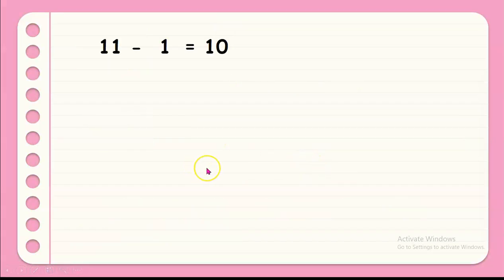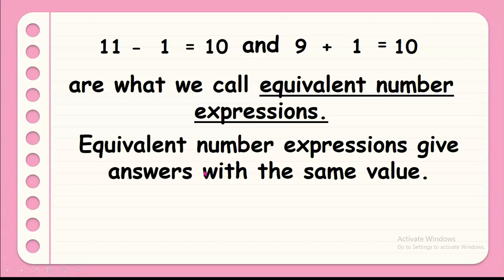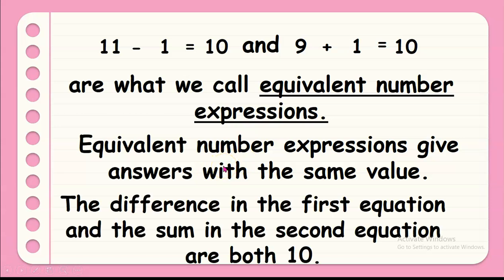Now, 11 minus 1 equals 10 and 9 plus 1 equals 10. They are what we call equivalent number expressions. And equivalent number expressions give answers with the same value. So, the difference in the first equation and the sum in the second equation are both 10.